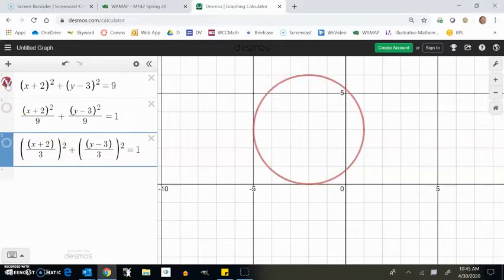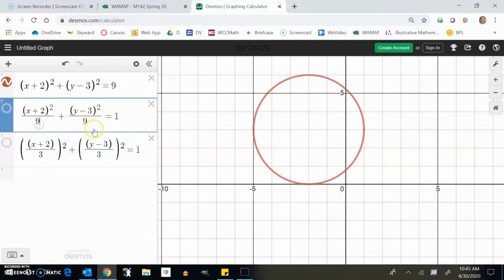Notice I divided by the 9, so in the x direction from the center I'm offset by 3, and I divide by 9 or by 3 in this form, it's really by 3 squared. I'm offset by 3 in the y direction.